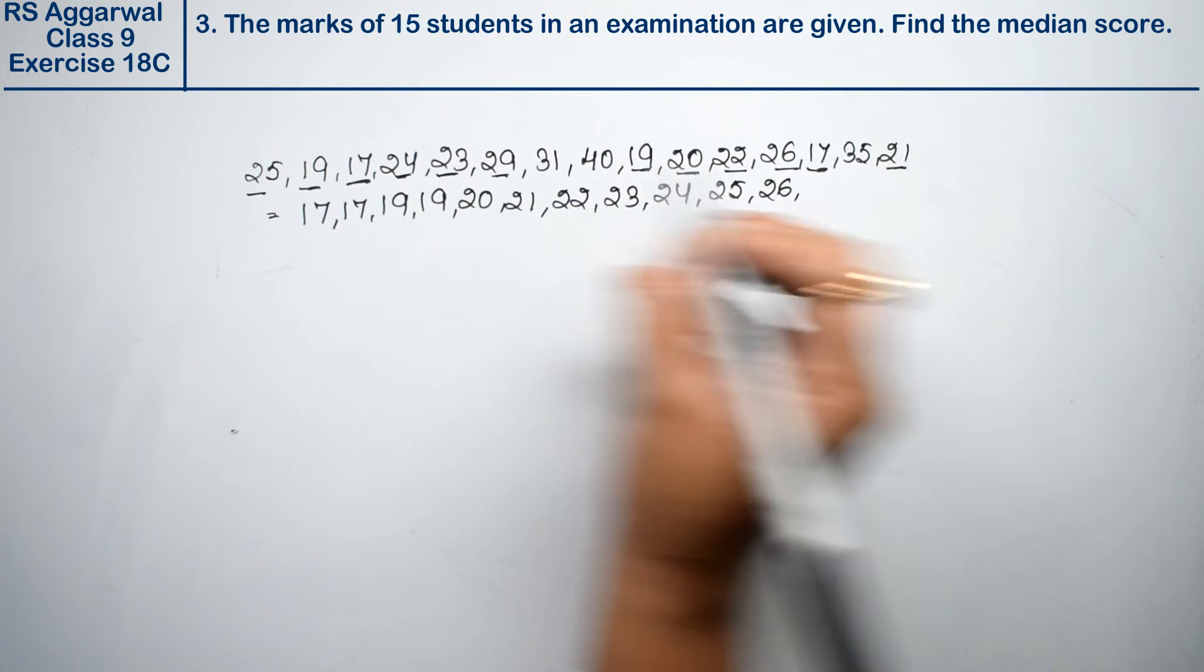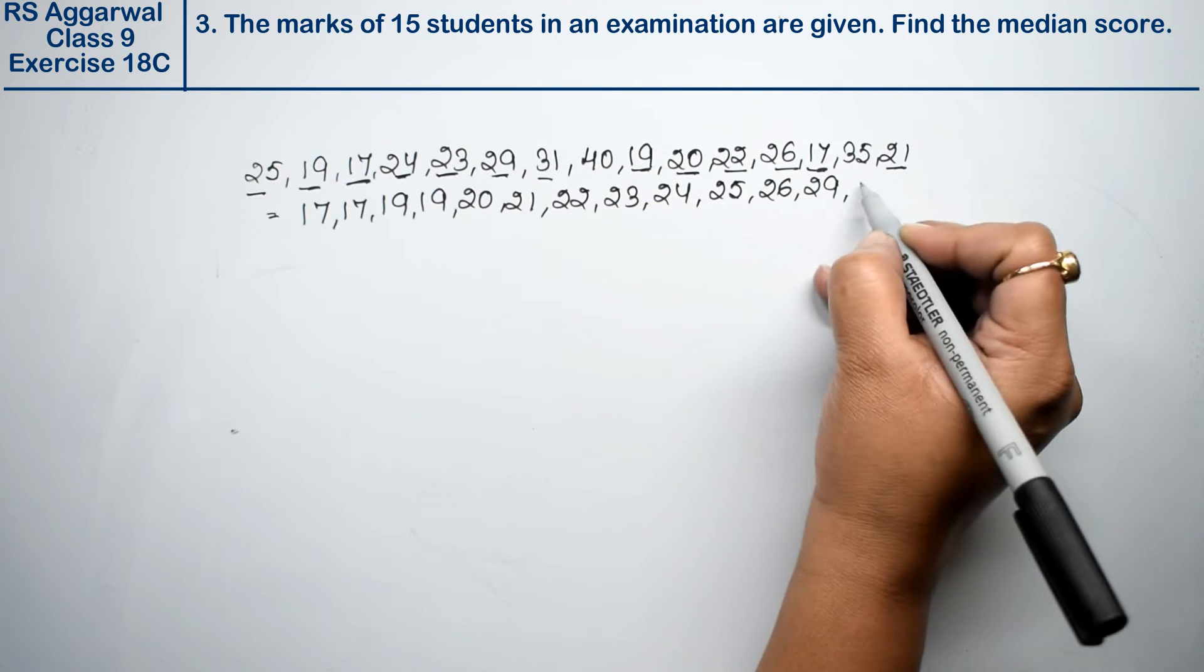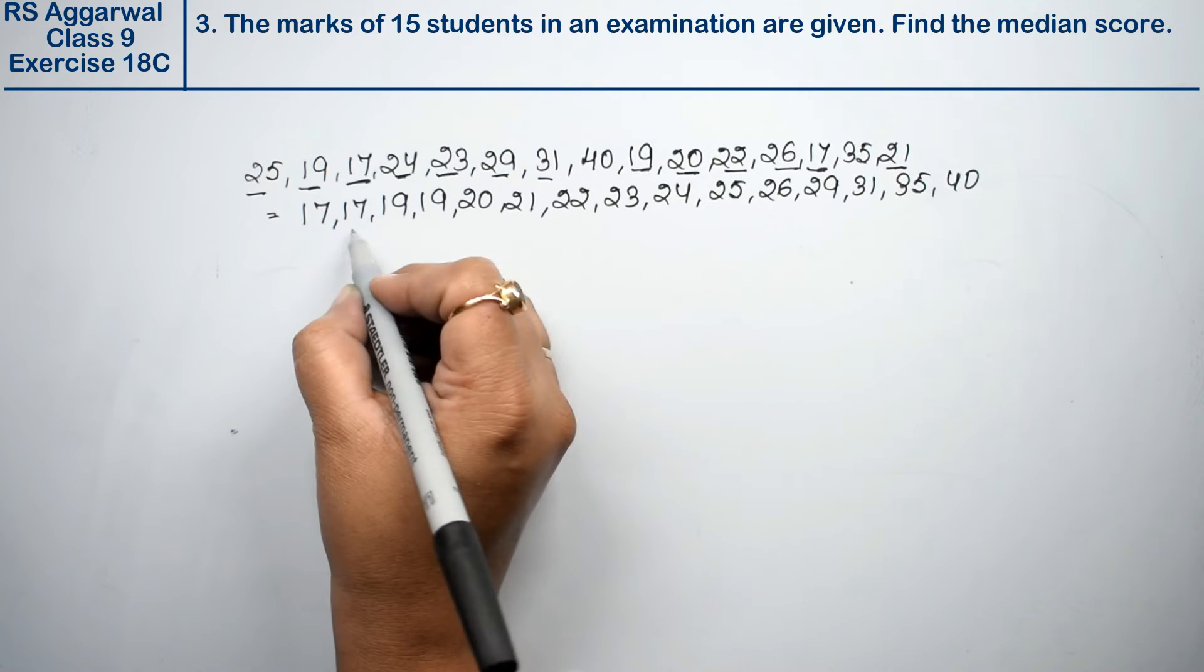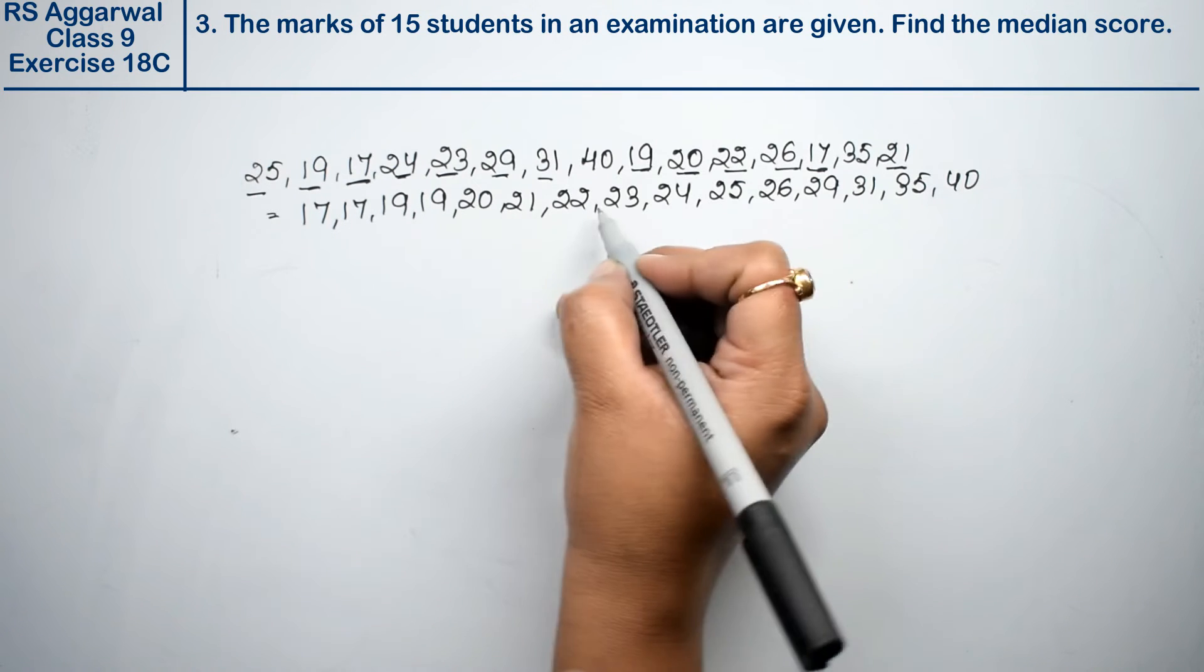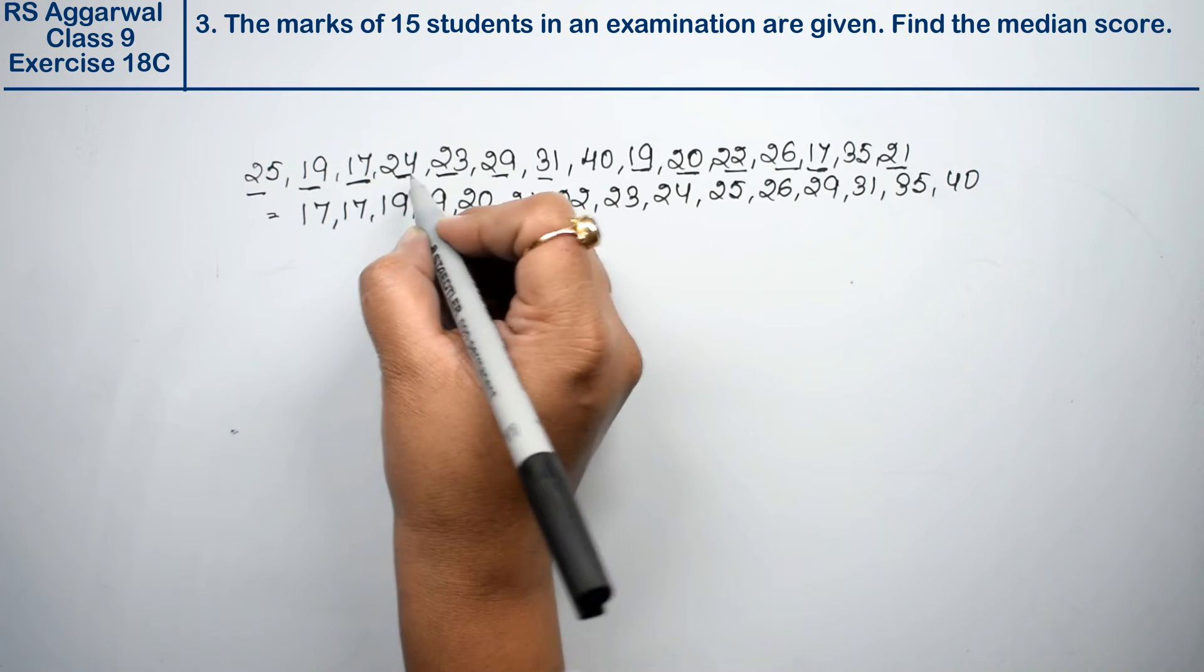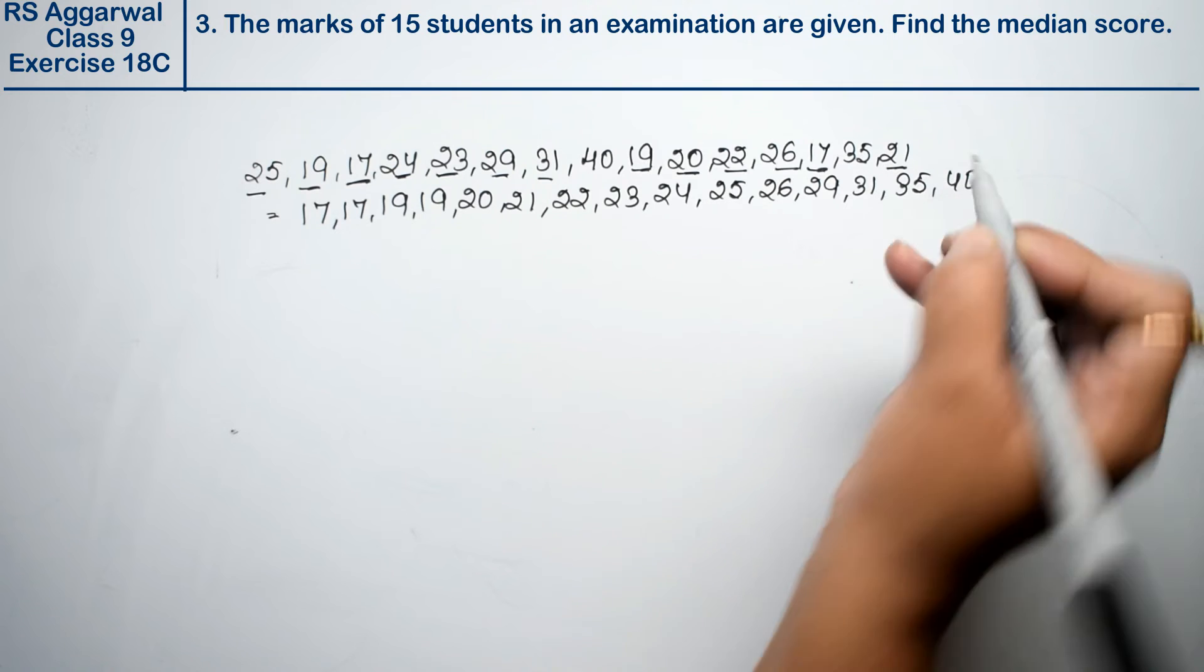29, 31, 35, and 40. So let's see how many are there. Let me count: one, two, three, four, five, six, seven, eight, nine, ten, eleven, twelve, thirteen, fourteen, fifteen.